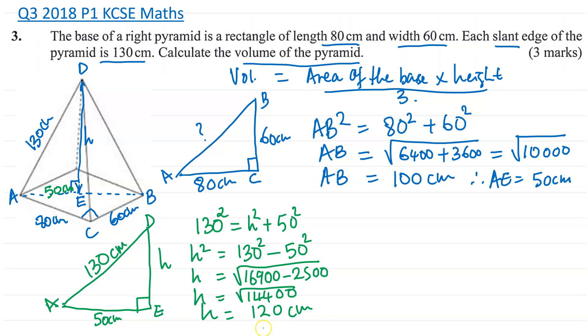Height is going to be the square root of 14400, which is going to give you 120 centimeters. So now we have the height as 120 centimeters. We can go ahead and find the volume.